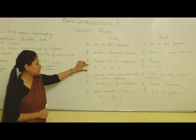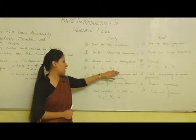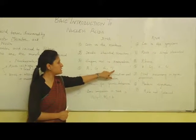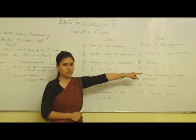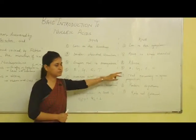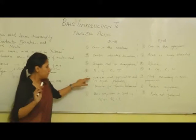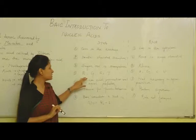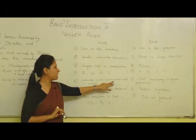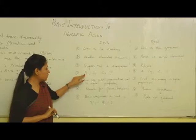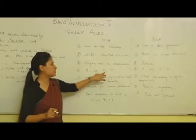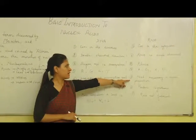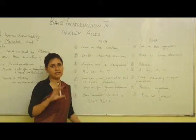Difference four: the nucleotide bases present in DNA are A, G, C, and T — adenine, guanine, cytosine, and thymine — whereas in RNA, thymine is replaced by U, or uracil. Difference five: in DNA, purines and pyrimidines are in equal proportions, meaning purines A and G equal pyrimidines C and T, or A + G = C + T. This is the rule of DNA, but it is not applicable in the case of RNA.